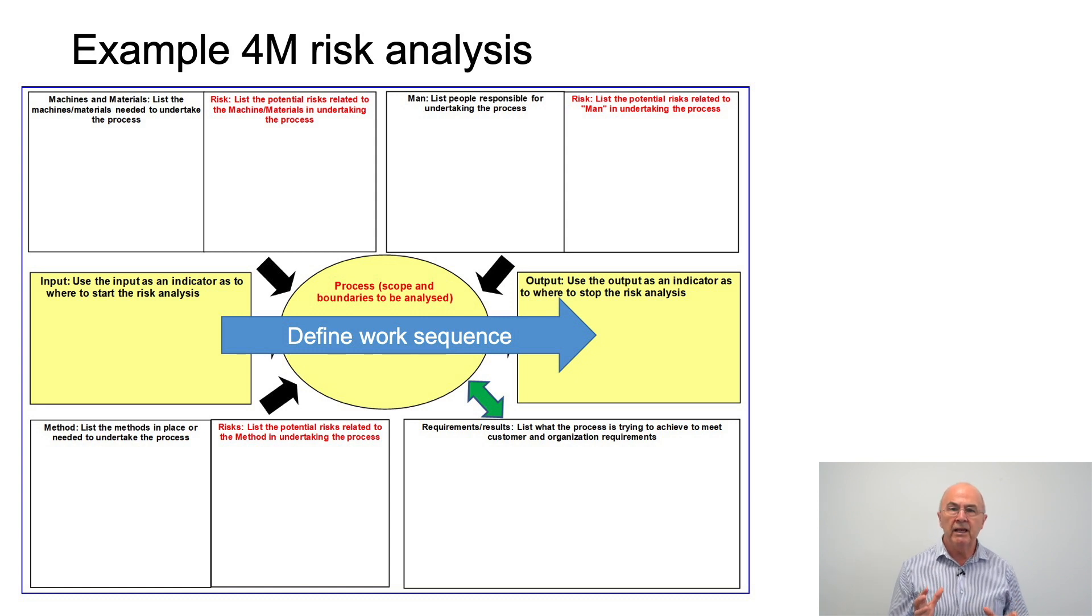Once that is done we need to think about the bottom right hand box: what requirements at this process step are we trying to achieve? These requirements could be defined by the customer, they could be product requirements, or they could be things that the team have defined as relevant process requirements for this step in the manufacturing process.